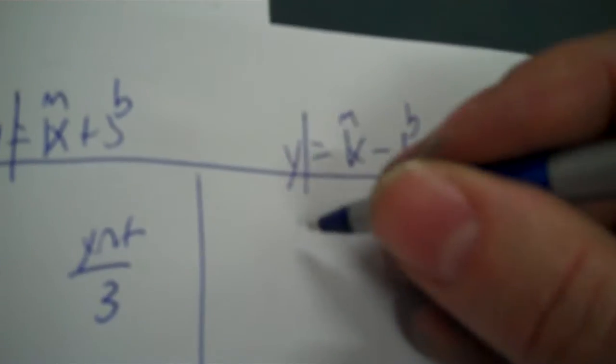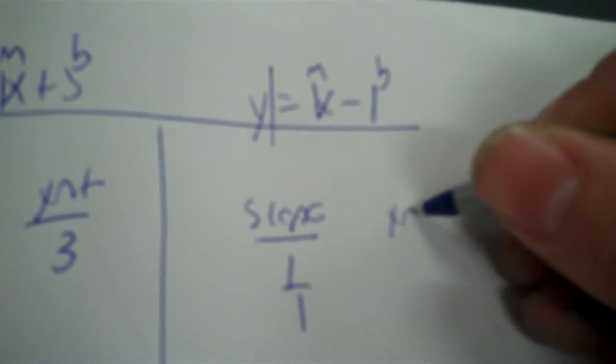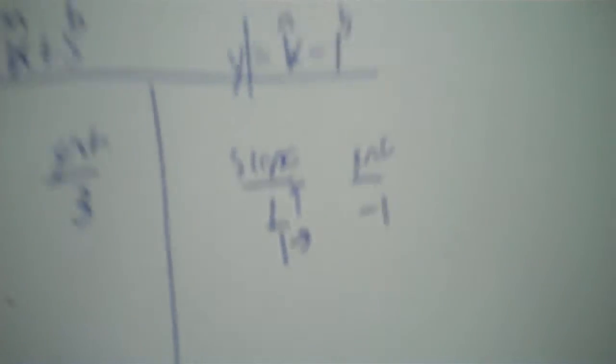In the other equation, we have Y equals X minus 1. So, M, B, slope 1 over 1. The Y intercept is minus 1. Now, this is a situation that you haven't seen before. Up 1, forward 1, up 1, forward 1. A little problem here. The lines are never going to cross.